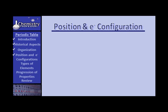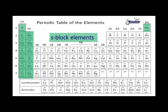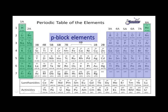Let's look at position on the periodic table and electron configuration. The periodic table gives you an excellent way of noting electron configurations. These are the s-block elements — they are s-block because their outer electrons are in the s orbital of that particular energy level. For period 1, hydrogen and helium, their last electrons are in the 1s. For lithium and beryllium, in the 2s. Sodium and magnesium, in the 3s. And so forth on down. Cesium and barium, in the 6s.